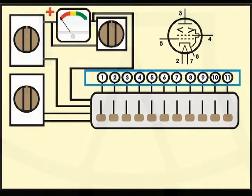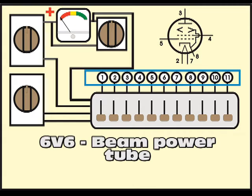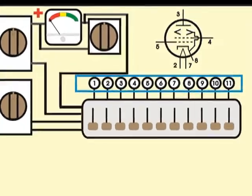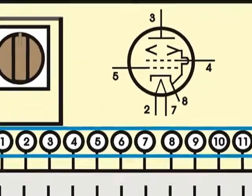Take for instance the test of a 6V6 beam power tube. The numbers of the pins for each internal element are shown in this diagram.